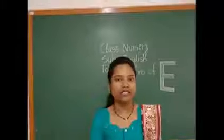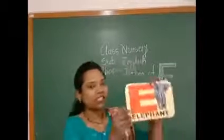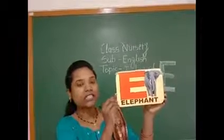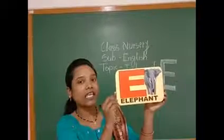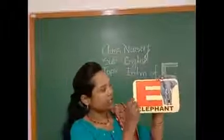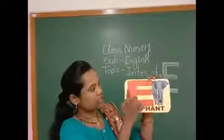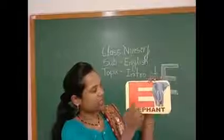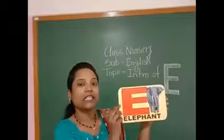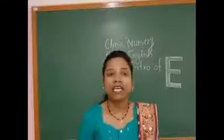I will tell you. Ok, this is the letter E. How to write E? First, a standing line, then a sleeping line, sleeping line, sleeping line. This way we write letter E. E say kya kya hota hai?